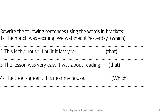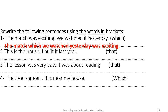Now it's time for rewriting the following sentences using the words in brackets. Number one: 'The match was exciting. We watched it yesterday.' Use which — we get: 'The match which we watched yesterday was exciting.' The extra information is 'we watched it yesterday.' Number two: 'This is the house I built it last year.' Use that — we get: 'This is the house that I built last year.' That refers to the house. Which and that have the same meaning and refer to animals and things.